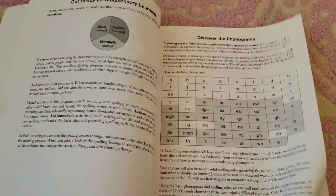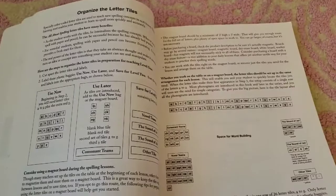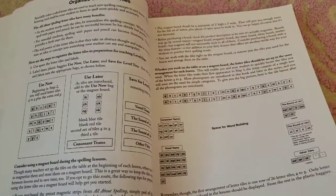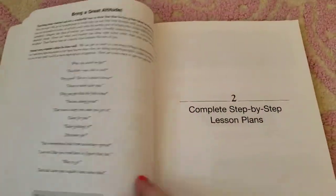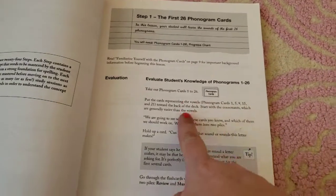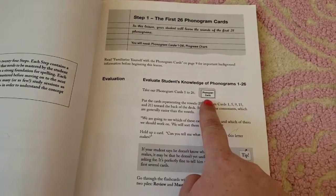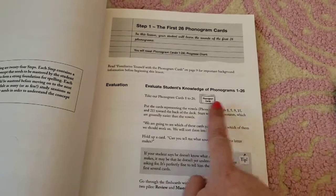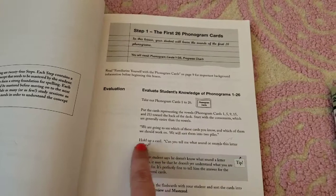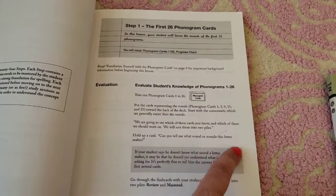It works in phonograms, so every spelling list definitely has a reason for it, so it'll be silent E or OA words. And then here is lesson one. It tells you as a teacher exactly what you need to say. It tells you which phonogram cards to pull out. So you would pull out these cards, you'd go over them with them, you would read it. It even tells you down to hold up a card and say, can you tell me what sound or sounds this letter makes?